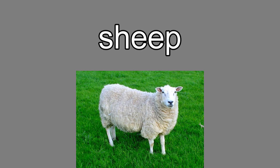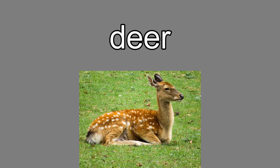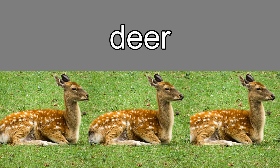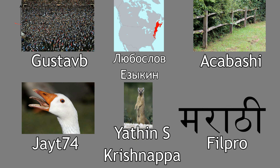Why is the plural of sheep still sheep, and deer still deer? In Old English, certain nouns had no plural ending in the nominative and accusative cases.